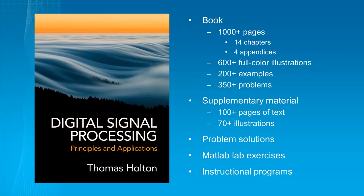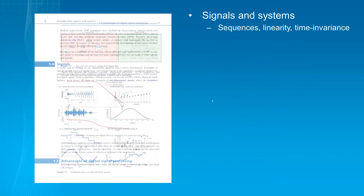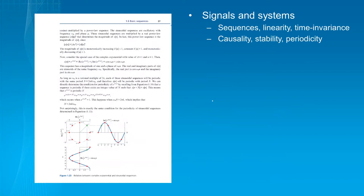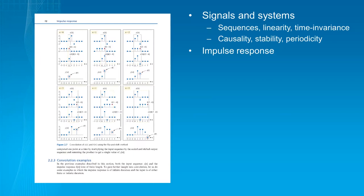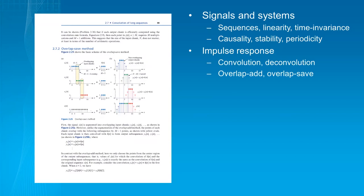So the first chapter is your basic signals and systems, the usual suspects: sequences, linearity and time invariance, causality, stability, and periodicity. And as I go through these topics on the left side, you'll just see examples of pages. And to be honest, I've just shown them because they've got nice figures in them. The second chapter, main chapter, is impulse response, which is again the usual suspects: convolution and deconvolution. And overlap-add, overlap-save. I do that here. And I also do that in the context of the FFT.